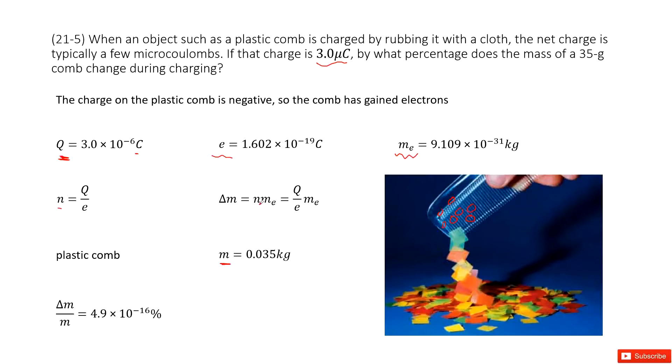And use this number of electrons times the mass for each electron. You get the mass for these electrons, right? Mass for these electrons, this is called delta m. Then we use this delta m divided by total mass for plastic comb. Then we get the answer there.